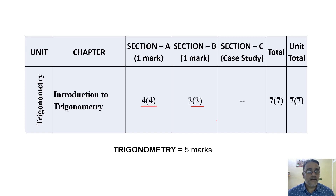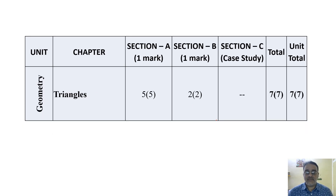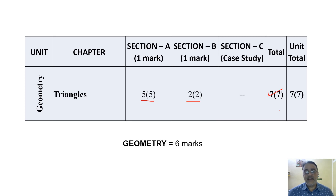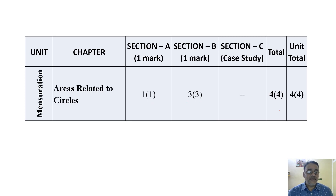For Geometry (Triangles), Section A has five questions and Section B has one question — seven questions and seven marks altogether. The unit weightage is six marks according to the Term 1 syllabus.